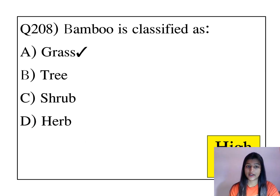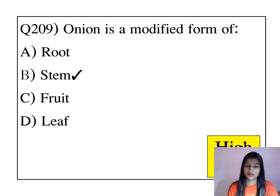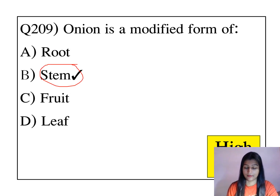Bamboo is classified as a grass. Onion is a modified form of stem.